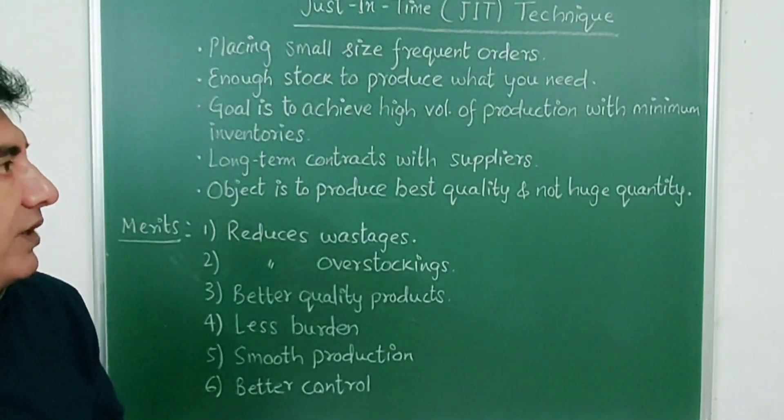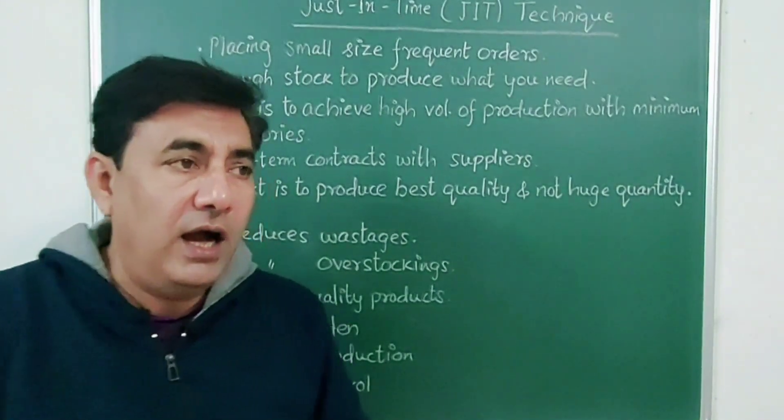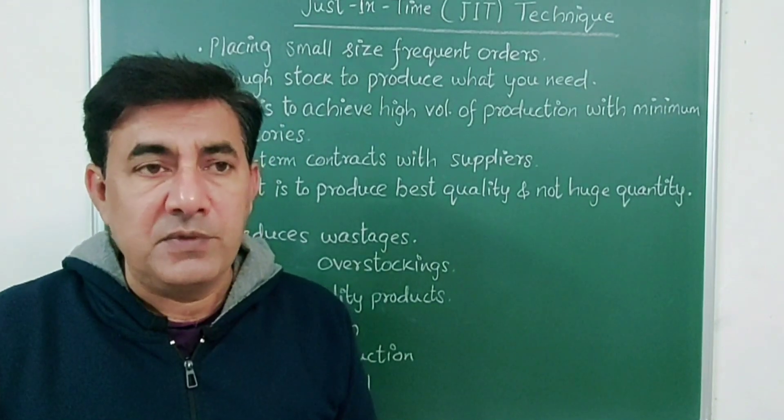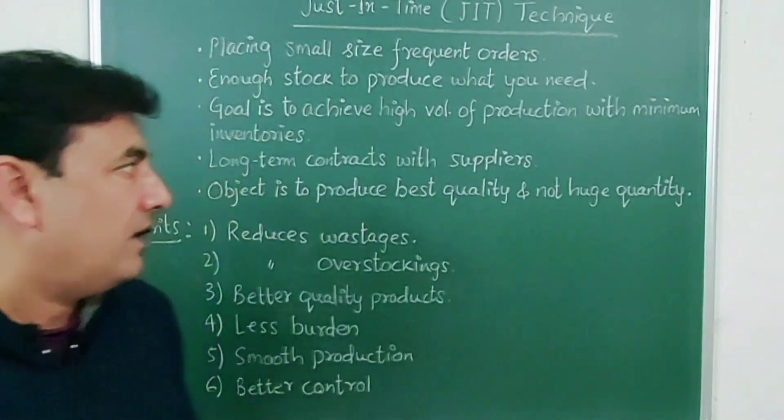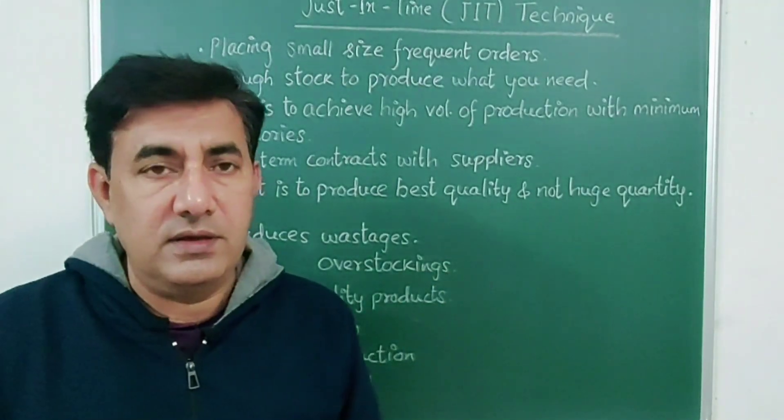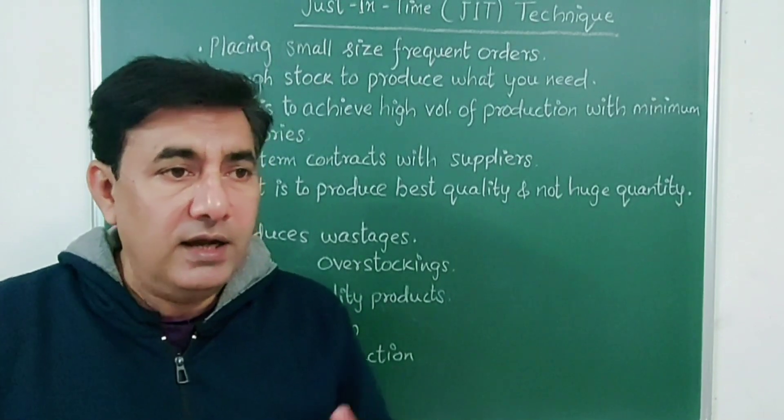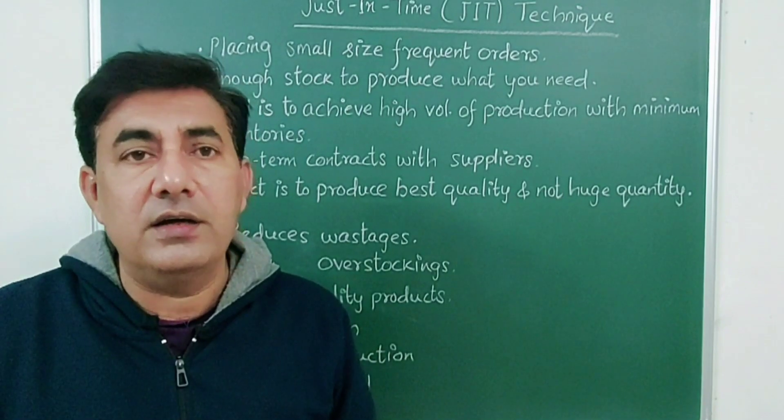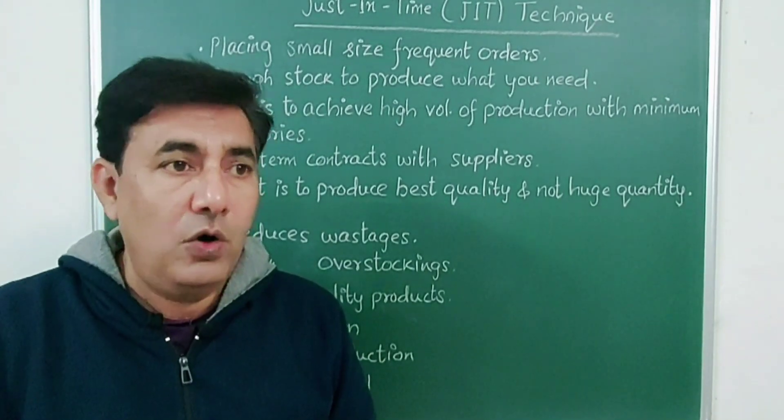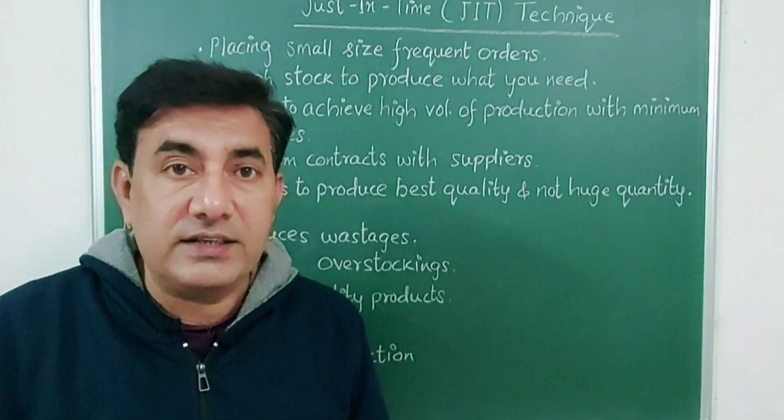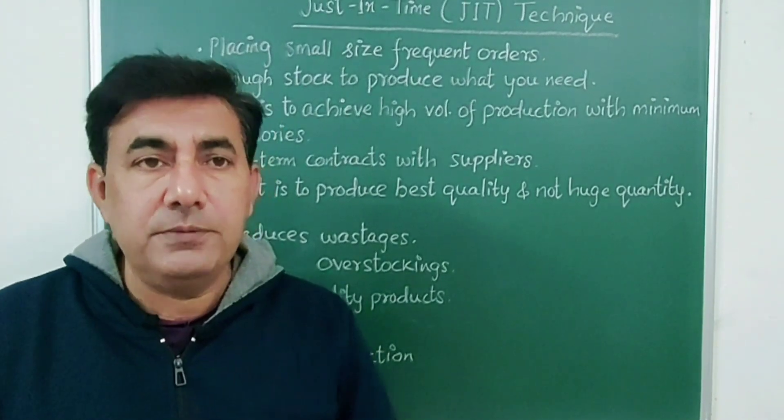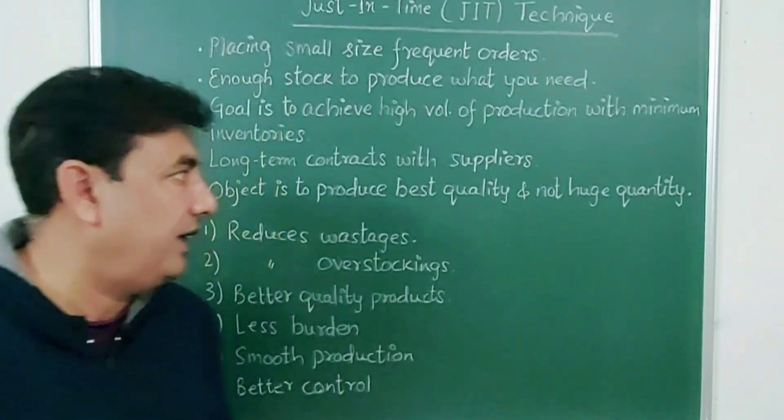Goal is to achieve high volume of production with minimum inventories. Again, high volume items, best quality items produced with minimum inventories. You don't have to maintain a large stock. Then, long term contracts with suppliers. Now this is very important. Unless and until the suppliers have good contracts with the company, if you don't have good relations with the suppliers, then you won't get orders frequently. So it's very important to have good relationship with the suppliers or you can even enter into contracts, agreements where they will regularly supply the materials at regular intervals so that your production process will not be stopped, will not be hampered.